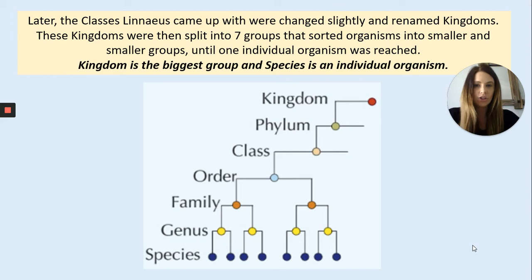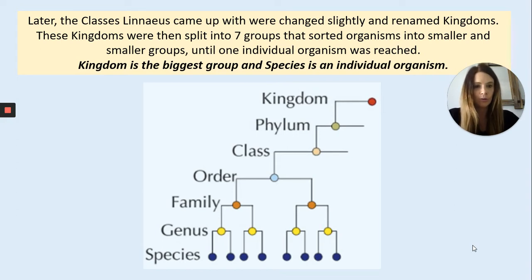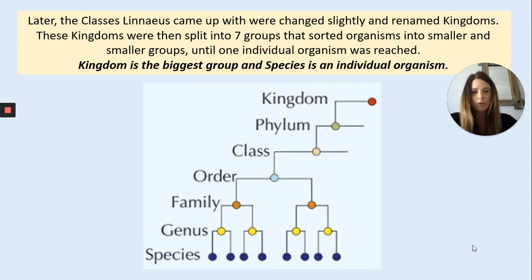Later, these were slightly changed and split into seven groups, which have an order you need to know for your exam. The kingdom is the biggest group, with subdivisions down to species being an individual organism. You have to remember the order: kingdom, phylum, class, order, family, genus, and species.